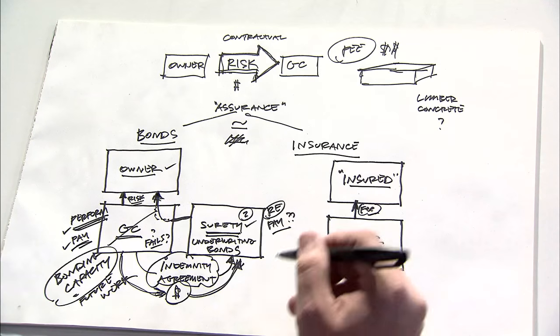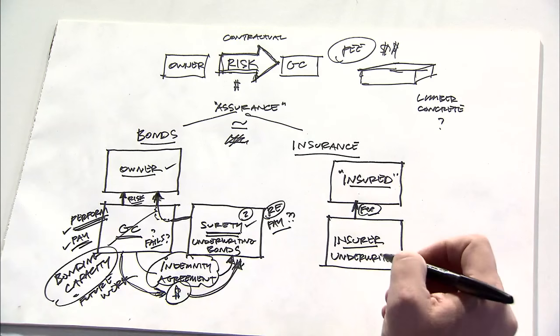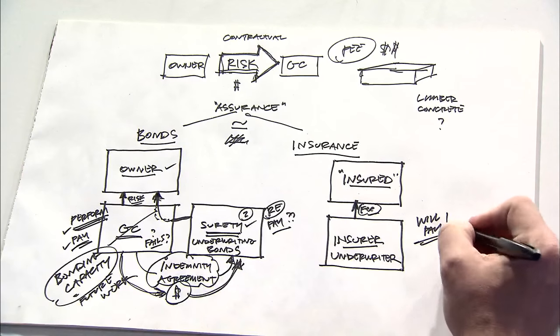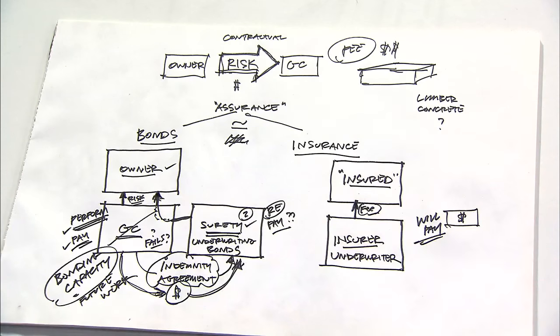Now, another fundamental difference is that insurers go into this deal knowing that at some point in time they will have to pay. And they go in with that expectation knowing that accidents happen, there are weather events and other types of events, and that they will have to make payments sooner or later.